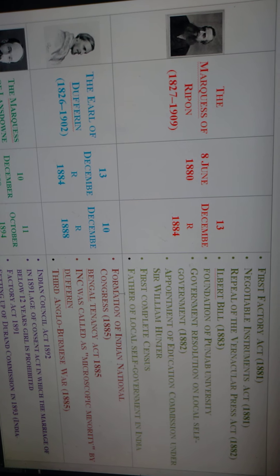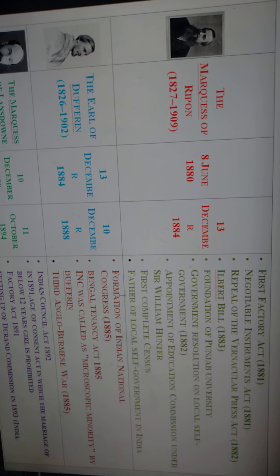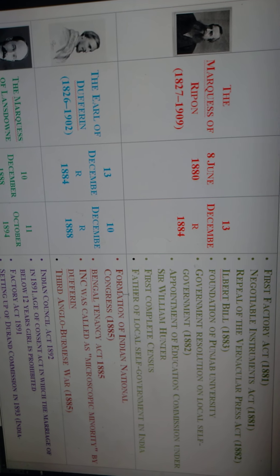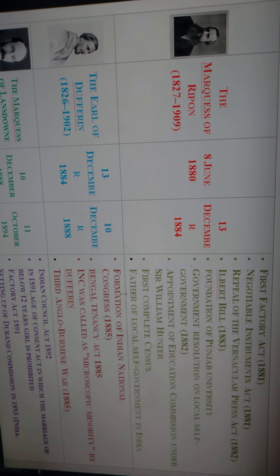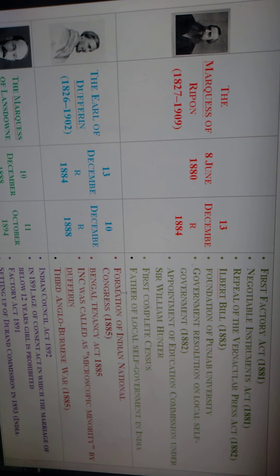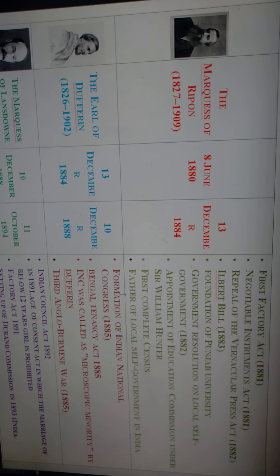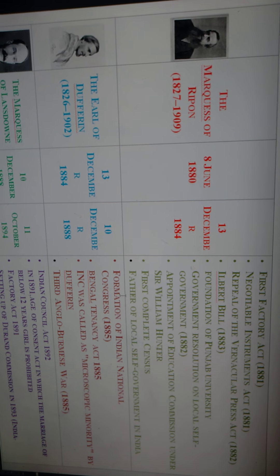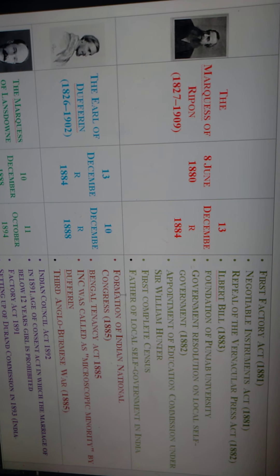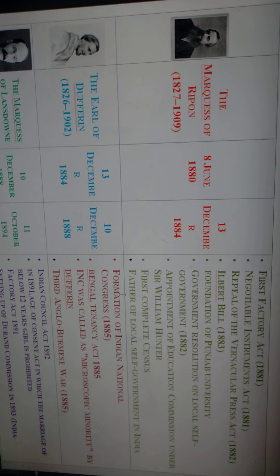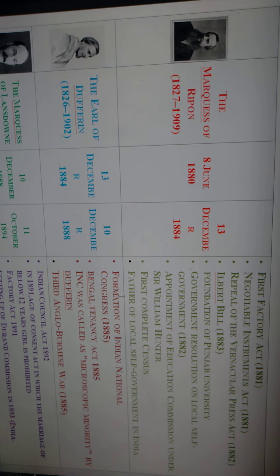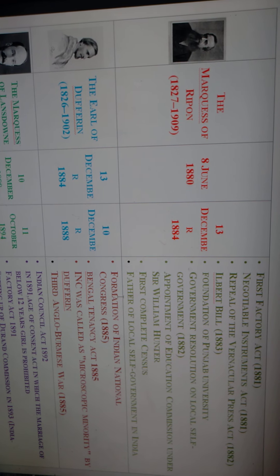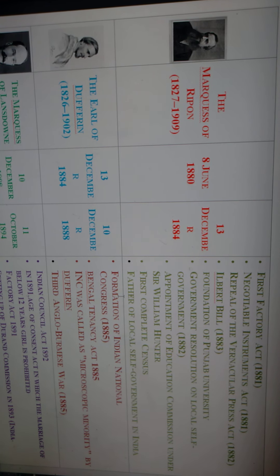The next Viceroy was the Marquis of Ripon, who served from 8th June 1880 to 13th December 1884. During his period: the first Factory Act of 1881 was enacted, the Negotiable Instruments Act of 1881 was enacted, the Vernacular Press Act was repealed in 1882, and the Ilbert Bill was introduced in 1883.